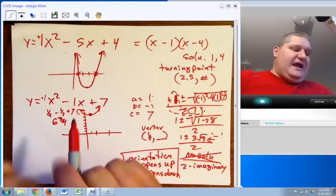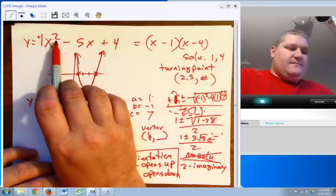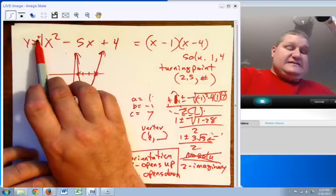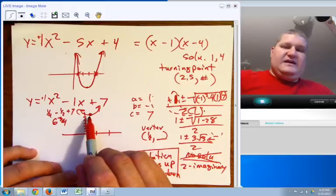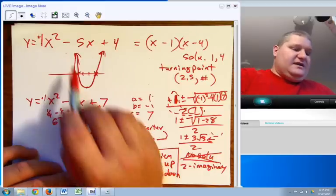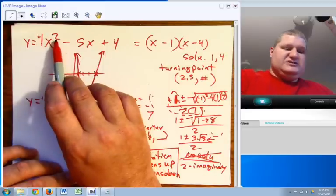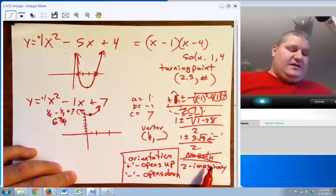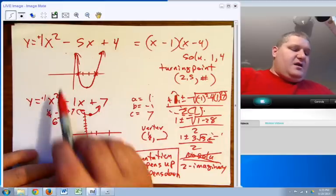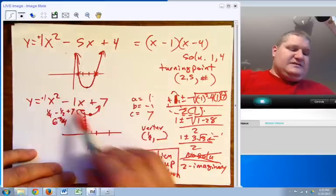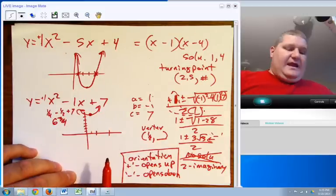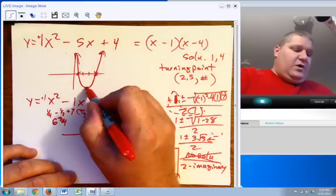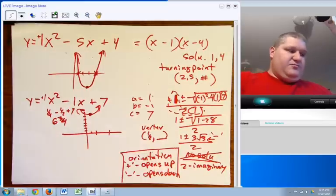So by looking at the power of the leading term, the sign of the leading term, we can tell a number of key things. One is the number of possible solutions, in this case square meant 2, here square meant none, no real solutions. Positive meant up, positive meant up, and in this case, there was a 1 turning point here and 1 turning point here.